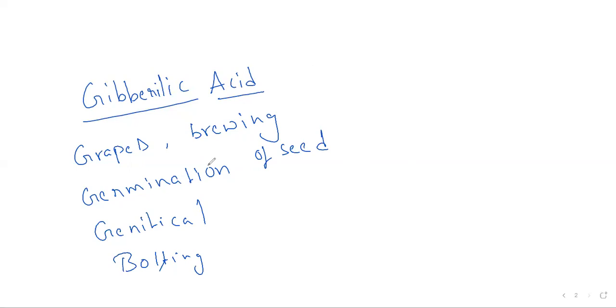So these are the mnemonic. You just remember grapes, which is for brewing, and germination of seeds. Genetically dwarf plants will be converted to tall plants. And bolting, which is increased internodal length. So that's it regarding the mnemonic. Thank you.